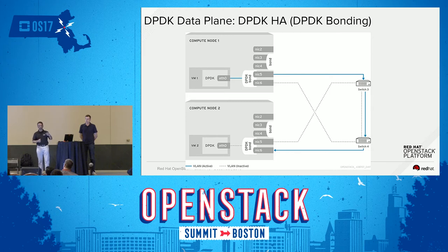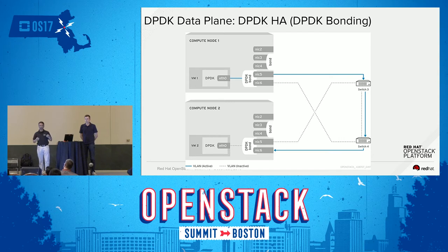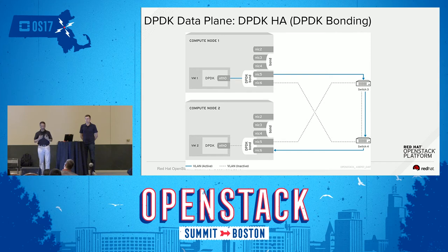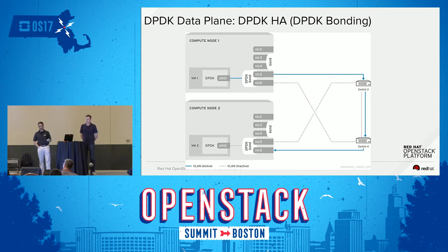What we do is we bond NIC5 and NIC6 using OVS-DPDK bond. In this example, VM1 is also running DPDK and it has a poll mode driver and it polls. The DPDK in the user space outside the VM delivers a packet, but unless the poll mode driver is active and goes and fetches that packet you could have very poor throughput — so both things have to be in sync. Ethernet 0 connects to the DPDK bond; NIC5 connects to switch 3 and NIC6 connects to switch 4, so if either switch 3 or switch 4 fails you still have at least half the throughput.